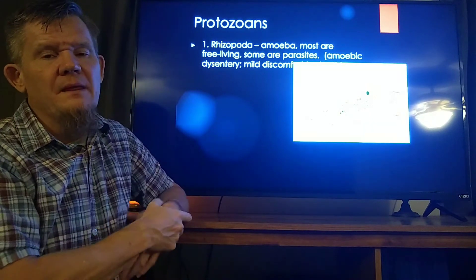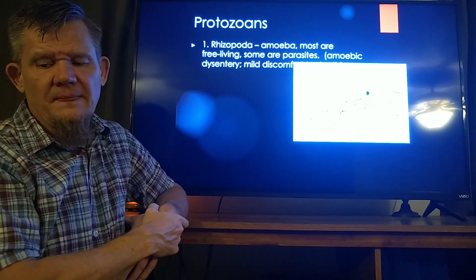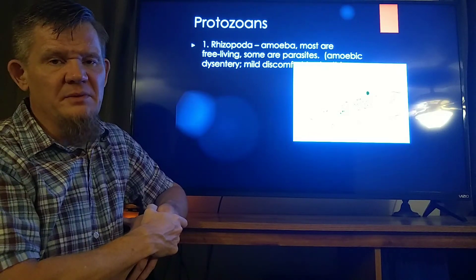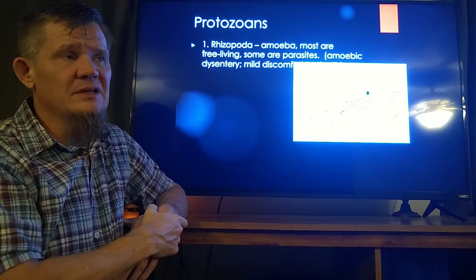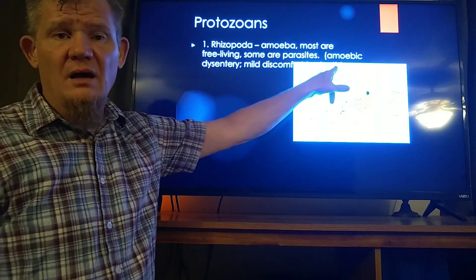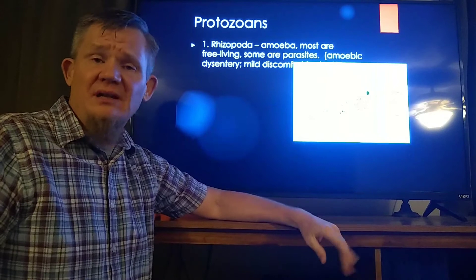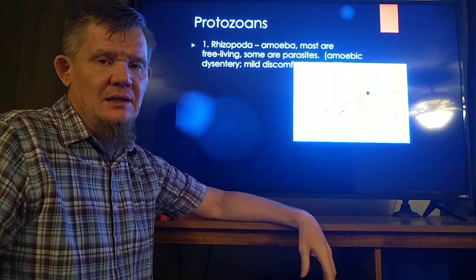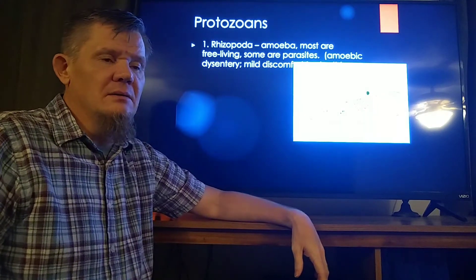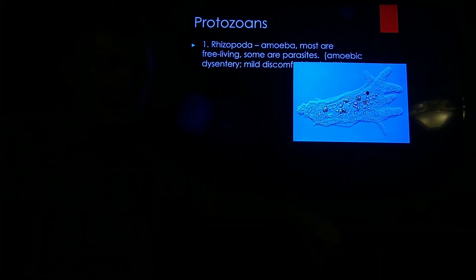Our first group of protozoans are the rhizopods — amoeba. You've probably heard of amoeba before. Amoeba are mostly free living, but some are parasites. There's one specifically responsible for amoebic dysentery. Dysentery is really severe diarrhea. Amoebic dysentery can cause mild discomfort all the way to death. Diarrhea actually kills more people than almost anything else on the planet — through dehydration. If you're not reabsorbing water, you're dehydrating. The amoebic version is the worst, and it can, in fact, kill you.